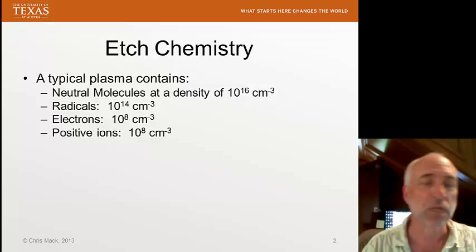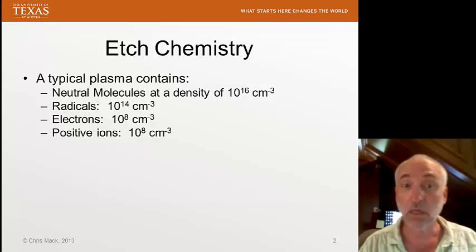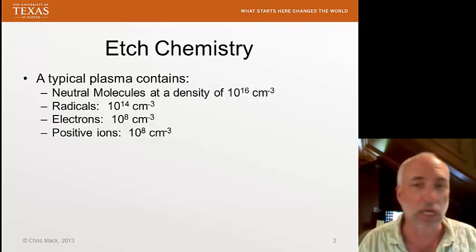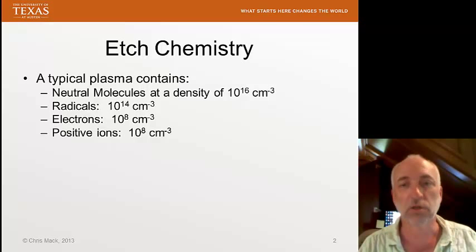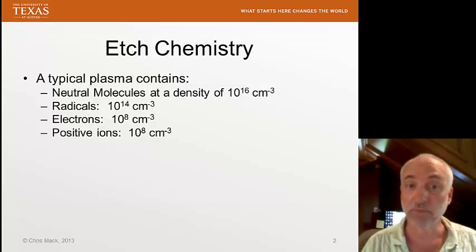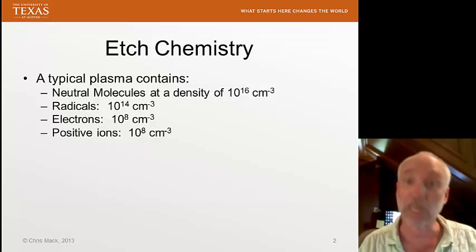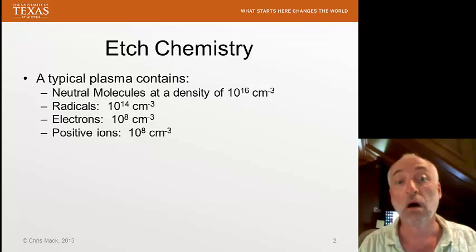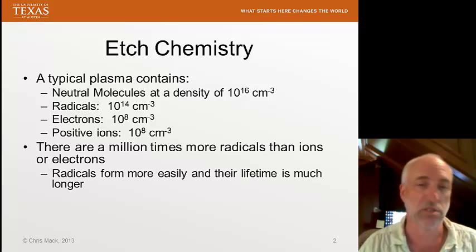Let's look at a typical plasma. You have a gas, and you excite that gas with some RF energy and maybe some DC energy as well. Most of the molecules are unaffected — the neutral molecules that have not been changed might have a density of around 10 to the 16th per cubic centimeter at a particular pressure. Free radicals are by far the biggest reactive species that comes out of this plasma, maybe 10 to the 14th per cubic centimeter. The ions — both electrons and positive ions — are generated in equal number, but ions are only around 10 to the 8th per cubic centimeter.